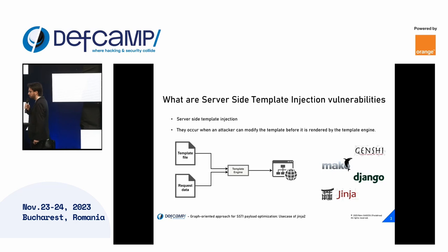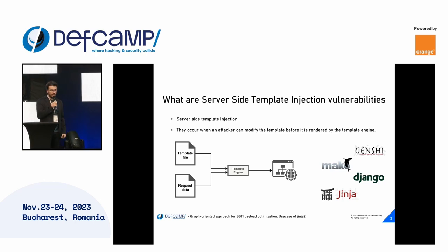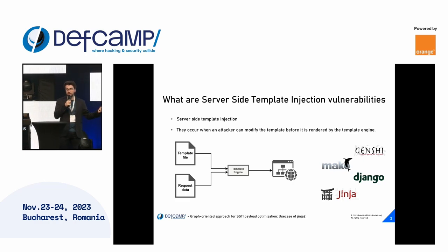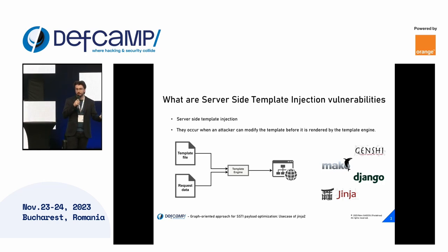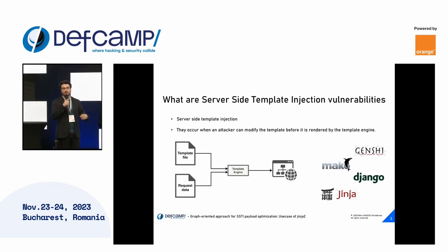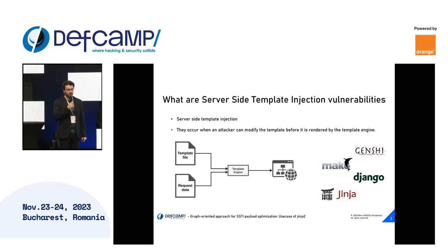Server-side template injection vulnerabilities happen when a template engine is used. A template engine is a kind of software — in this case for web servers — used to render data inside a template. You have a template which is always the same, and you have data such as a user profile, which gets rendered inside the template. For example in a web server, the template is the HTML page with all the CSS and classes, and the data contains only the user profile. Once rendered, you get the full page for your user.